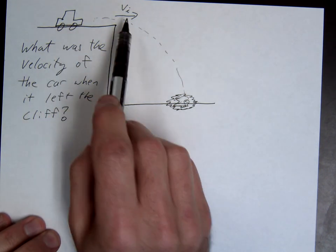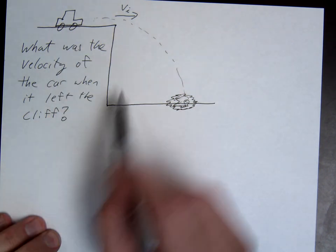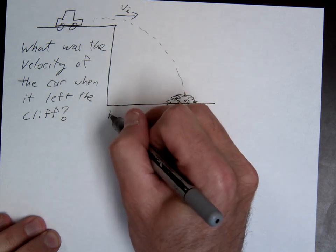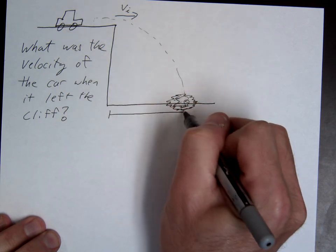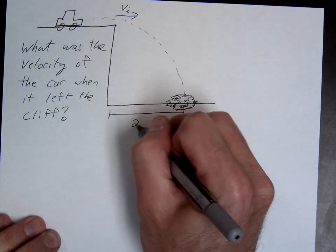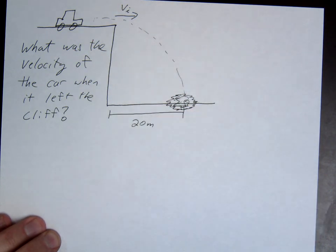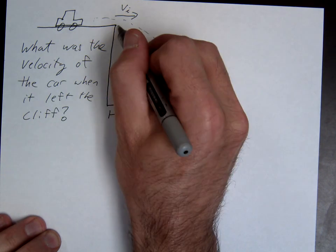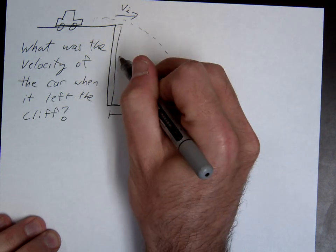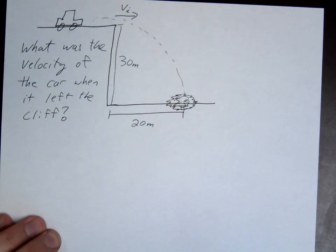So the question here is how fast was this car moving off this cliff? What was its initial velocity? Alright, let's go ahead and say that you're going to measure a couple things. Let's say this distance here you measure to be 20 meters. Say the height of the cliff you measure to be 30 meters.